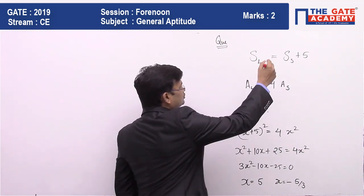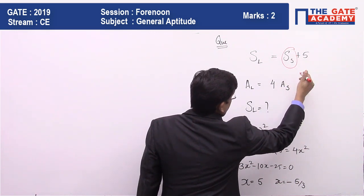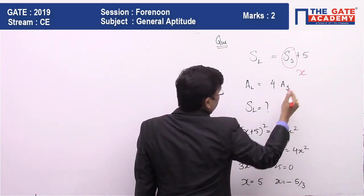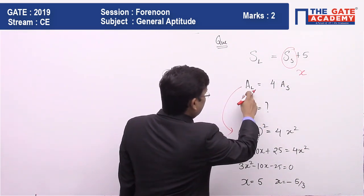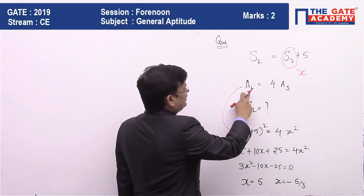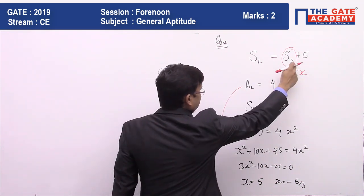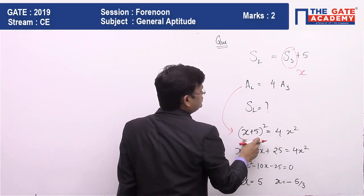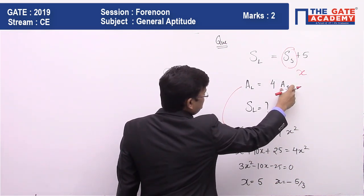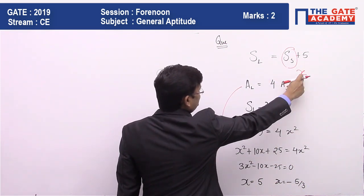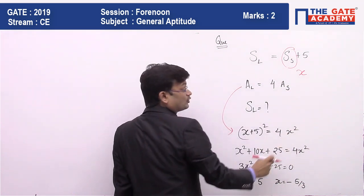To solve this, I will assume the side of the smaller square as x. Using this, the area of the larger square will be (x + 5)² and the area of the smaller square with side x gives us the equation (x + 5)² = 4x².